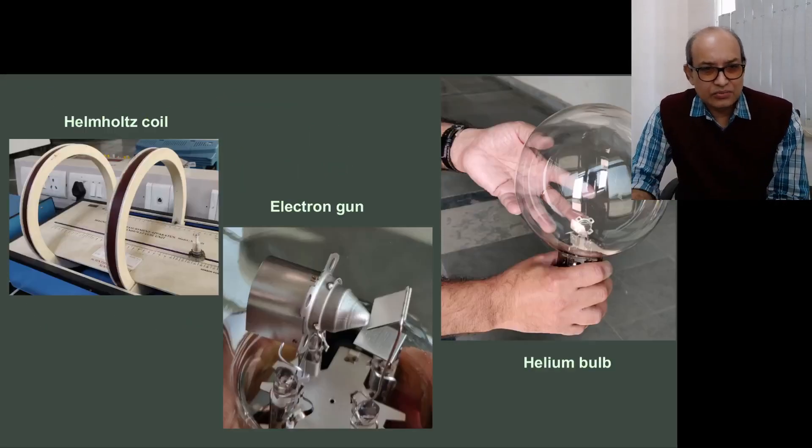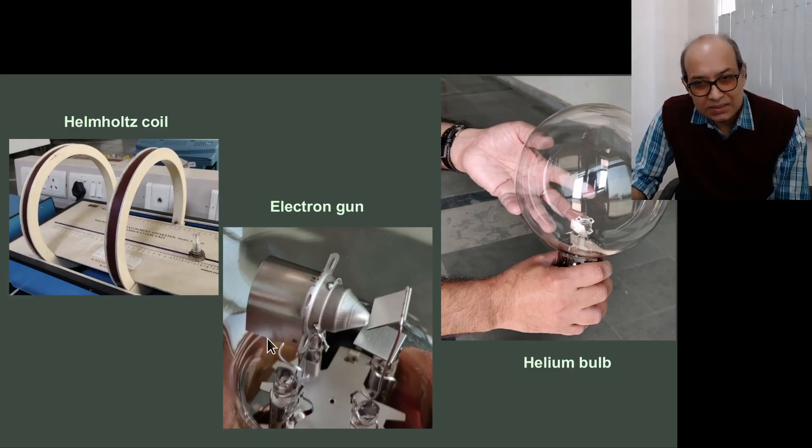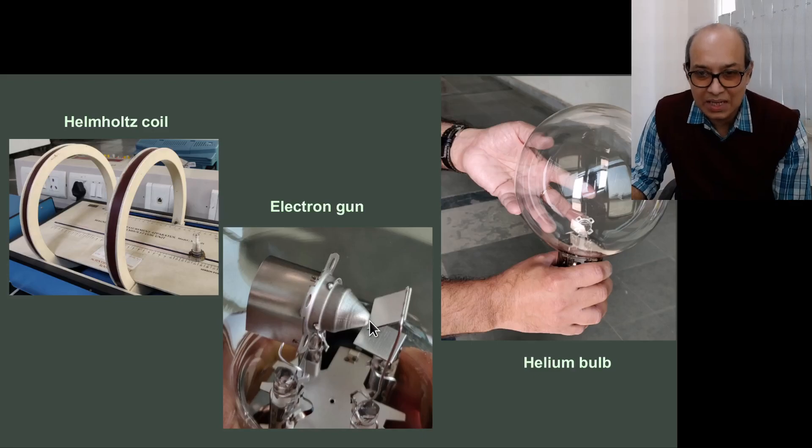The individual components we have seen them in the lab. The Helmholtz coil, this pair, and this is our electron gun. This side we have the anode and here we have the cathode. We heat up the cathode side and the electrons accelerate towards the anode. And there is a tiny hole at the end of this cone.